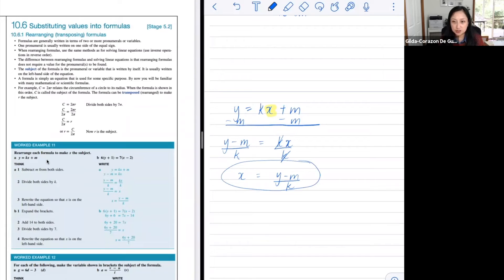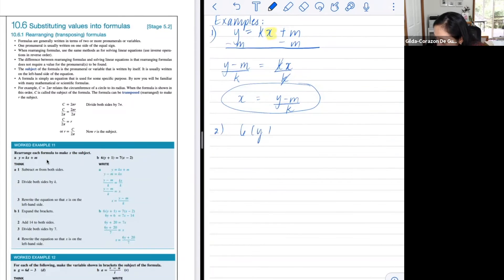What to do here would be to have x by itself, or make x as the subject. And 6y plus 1 equals 7x minus 2. So again, what we want to do would be to make x as the subject. And we've got 6y plus 6 equals 7x minus 14. And then what? We want to get rid of the minus 14, doing the reverse, is adding 14.